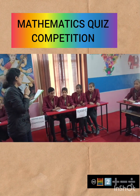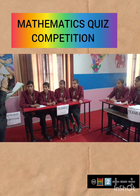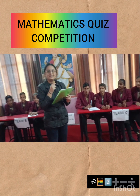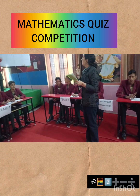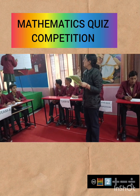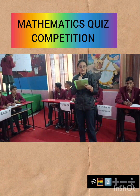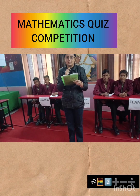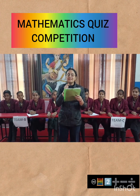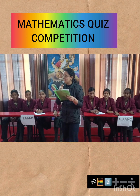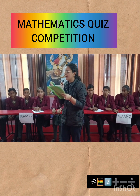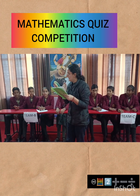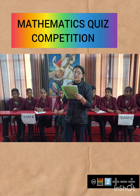Team C also answers wrong — minus one from Team C. The area of an equilateral triangle is root 3 by 4 into side squared. Since all teams answered wrong, the question moves on.